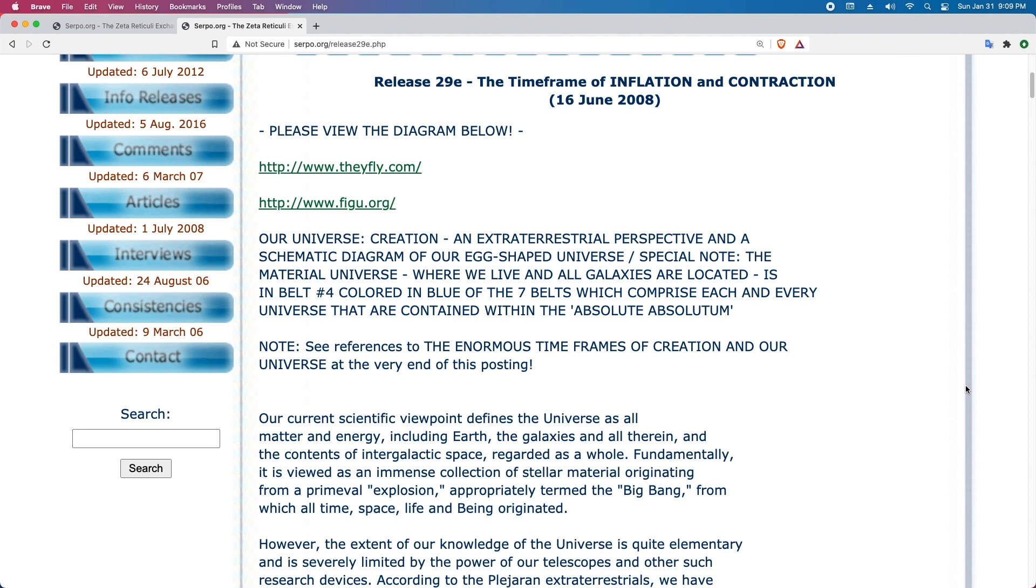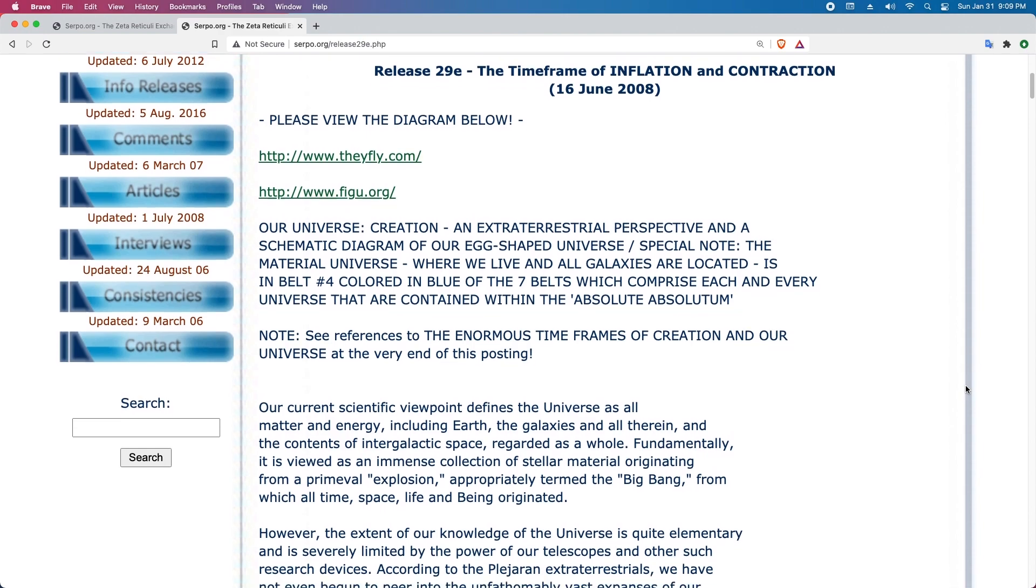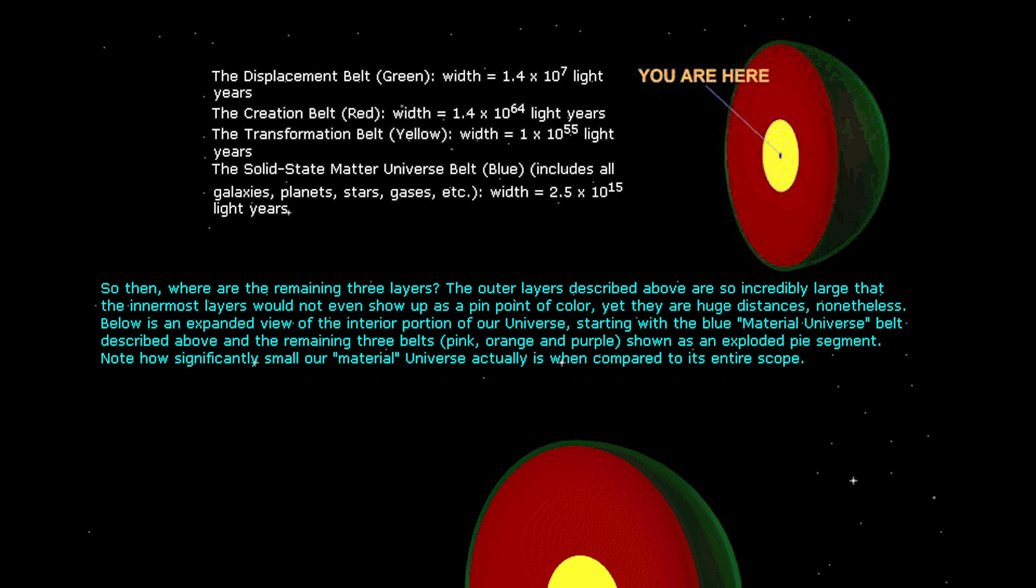Release 29E: The Time Frame of Inflation and Contraction. Our Universe Creation: An extraterrestrial perspective and a schematic diagram of our egg-shaped universe. Special note: the material universe where we live and all galaxies are located is in belt number four colored in blue of the seven belts which comprise each and every universe that are contained within the absolute absolutum. Our current scientific viewpoint defines the universe as all matter and energy including earth, the galaxies and all therein and the contents of intergalactic space regarded as a whole. Fundamentally, it is viewed as an immense collection of stellar material originating from a primeval explosion, appropriately termed the Big Bang, from which all time-space life and being originated.